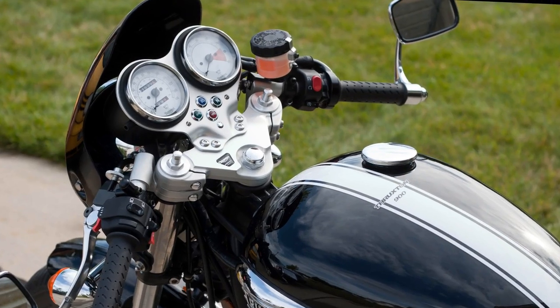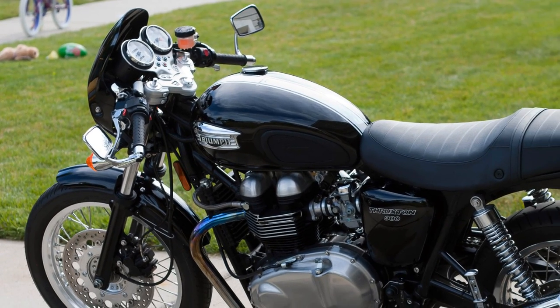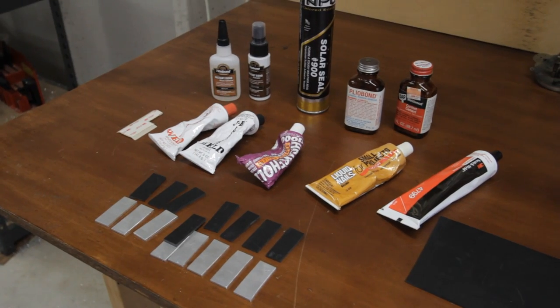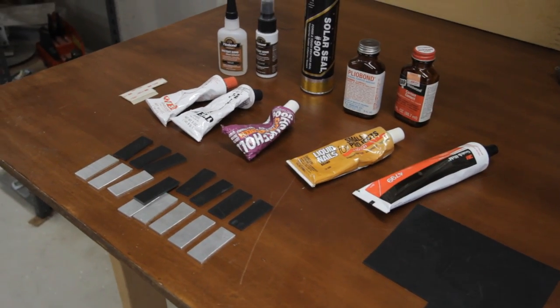While installing a factory center stand for my 2007 Triumph Thruxton, I discovered I needed a way to attach a piece of rubber to my side kickstand. Gluing dissimilar materials is always tricky, but rubber and metal is especially tough.